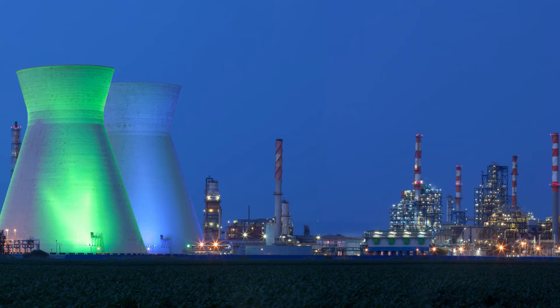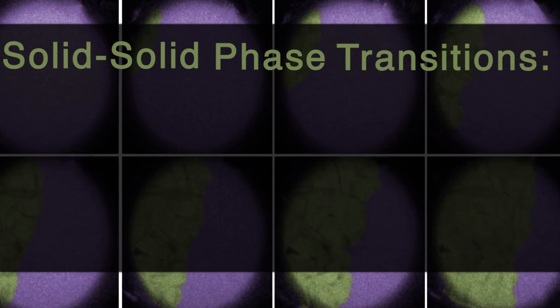For instance, one team at the lab is experimenting with how to make metals that better withstand radiation. This could mean a big step towards more efficient and safer nuclear reactors. Something that may be really important in these experiments is something called solid-solid phase transitions.